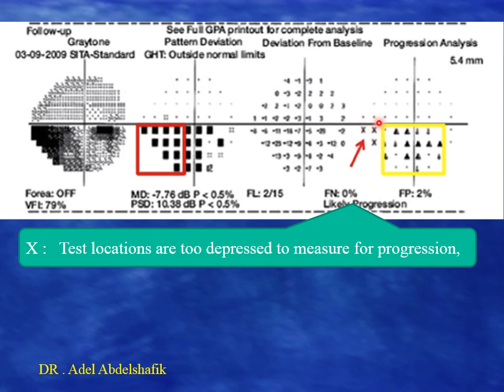Sometimes you see an X mark. The X mark means that certain locations are no longer calculated because they are too depressed to be measured. This means we are not sure about the progression — whether it is real progression or just fluctuation — because the sensitivity of that point is markedly depressed.